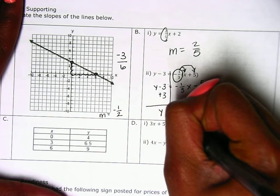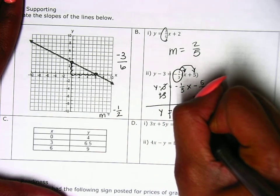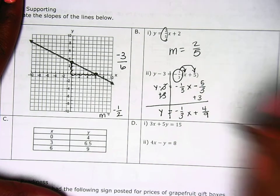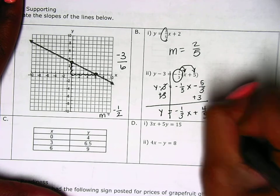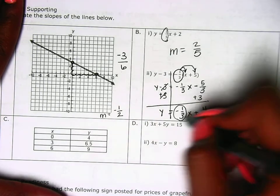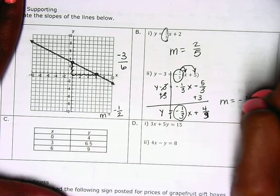So y is equal to, those canceled out, negative one over three x plus four over three. I said three and wrote nine. Four over three. So what is our slope? Negative one over three.